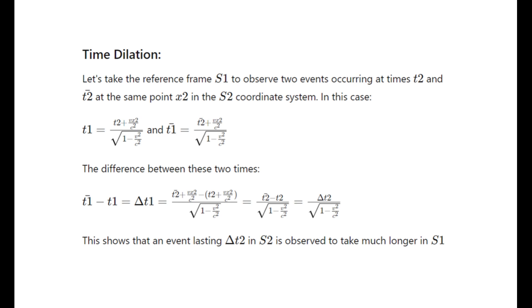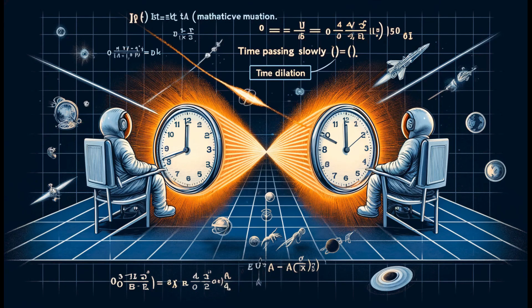The result shows that the time interval between the two events in the first frame of reference is longer than the time interval in the second frame of reference. This extended time interval in the first frame is directly related to the relative speed between the frames. This result illustrates the phenomenon of time dilation, where time appears to pass more slowly when one observer is moving relative to the other.